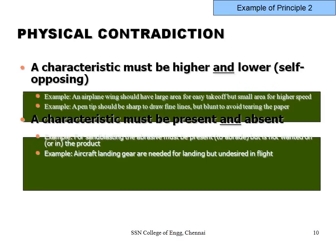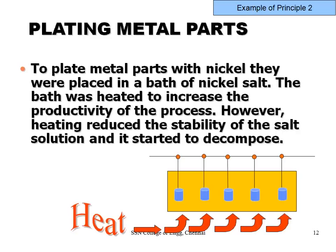Examples of contradictions: an airplane wing should have a large area for easy takeoff but a small area for higher speed. A pen tip should be sharp to draw fine lines but not so sharp it tears the paper. If you sandblast a material, the sand can remove fins, but the sand must then be removed afterward. An aircraft landing gear is required for landing but not for flight — this yes-and-no situation is what he calls a contradiction.